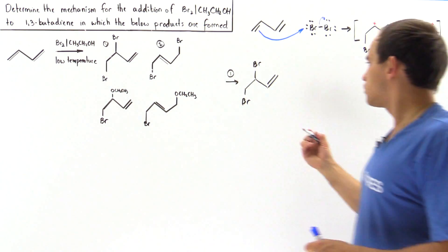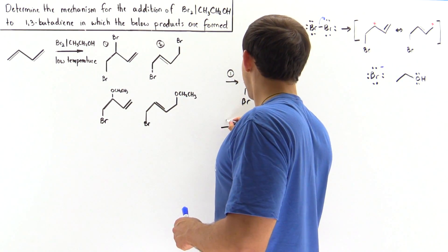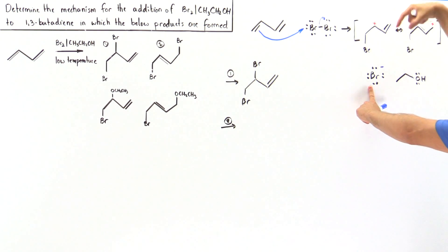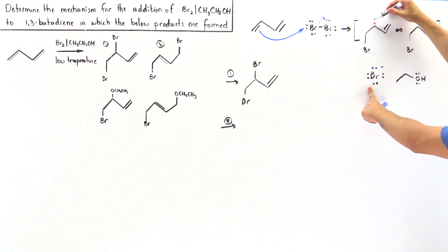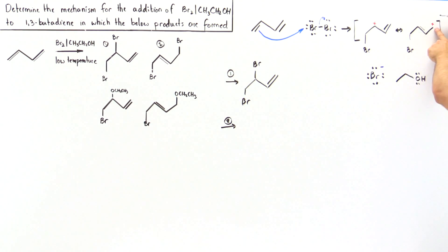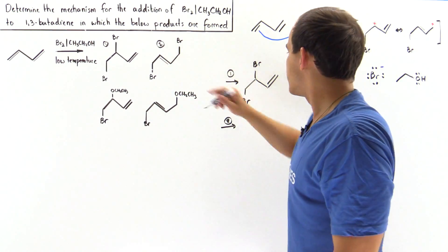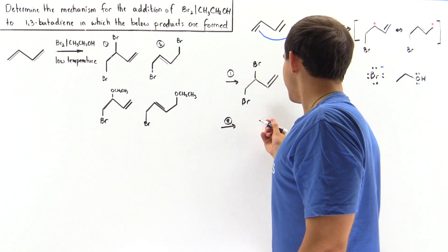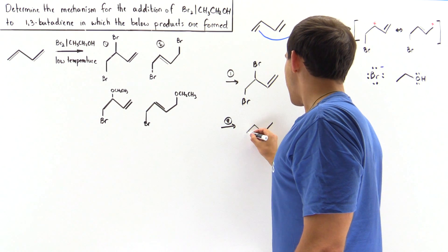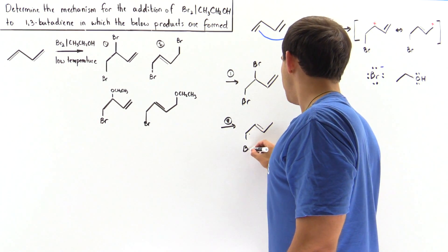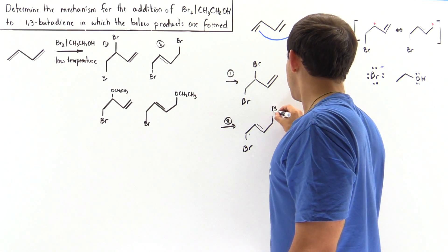Now, what about product 2? Product 2 is formed in a similar way — the bromide still reacts with this intermediate carbocation, but it doesn't react with this positive charge; rather, it reacts with this one. The lone pair of electrons attacks this carbon instead, forming product number 2.